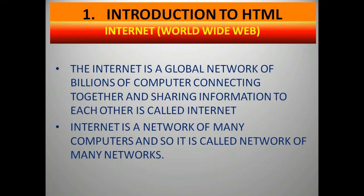First topic is internet. Internet means worldwide web. The internet is a global network of billions of computers connecting together and sharing information with each other. At present, computers are used extensively in many types of applications. Two or more computers can be connected to distribute research among them. Internet is a network of many computers, so it is called a network of many networks. Two or more computers can be connected to make possible the exchange of information between them, and this type of computer arrangement is called a computer network.